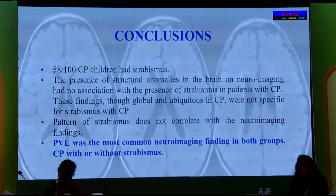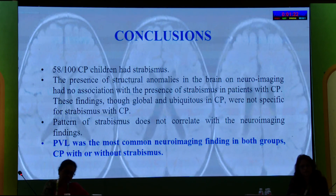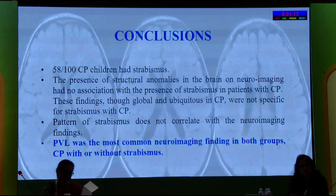In conclusion, with a take-home message: squint is the most common ocular finding in children with CP — in our study, 58% of children had squint. The presence of structural anomalies in the brain on neuroimaging had no association with the presence of strabismus in patients with CP. These findings, though global and ubiquitous in CP, were not specific for strabismus with CP. Pattern of strabismus does not correlate with neuroimaging findings. PVL was the most common neuroimaging finding in both groups — CP with or without squint. Thank you.